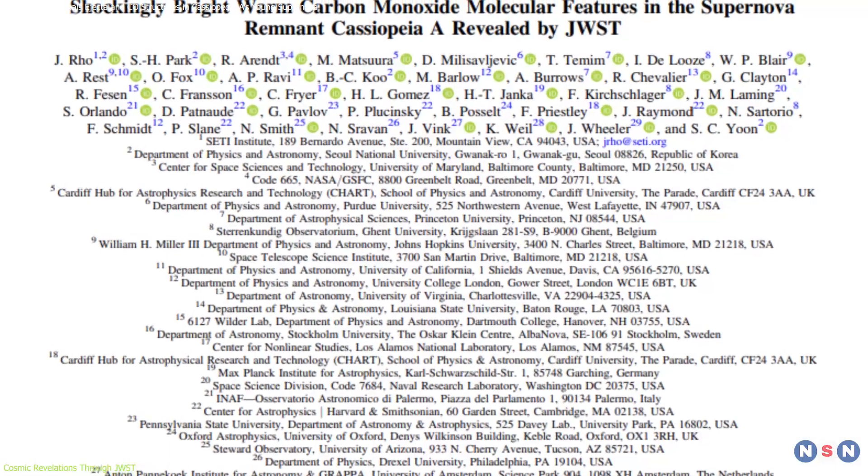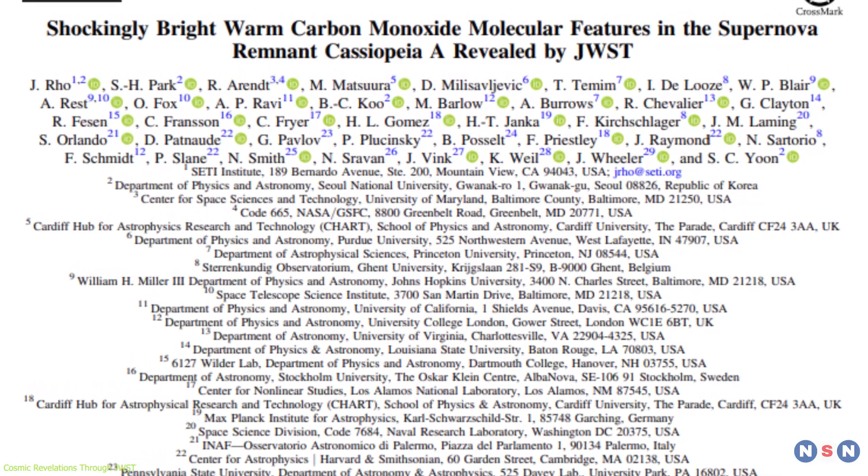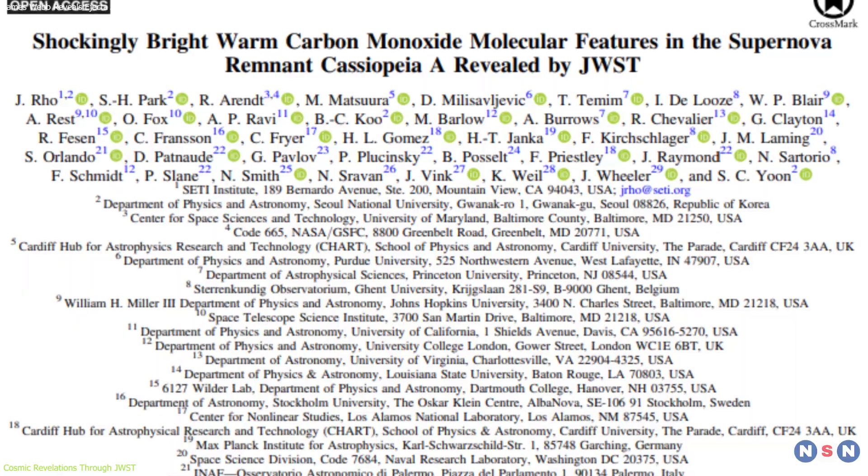In unprecedented detail, Webb revealed that carbon monoxide is predominantly found in the outer layers of the ejecta, surpassing the concentrations of argon.